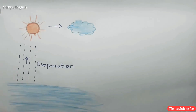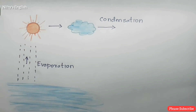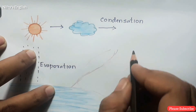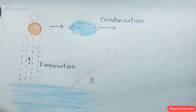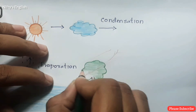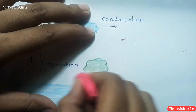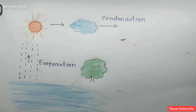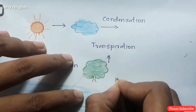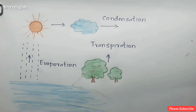The second process is condensation. Condensation is the process of a gas changing to a liquid. In the water cycle, water vapor in the atmosphere condenses and becomes liquid. Another important process is transpiration — the process of water vapor being released from plants and soil.